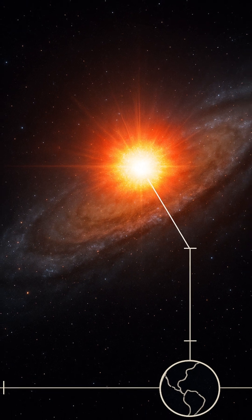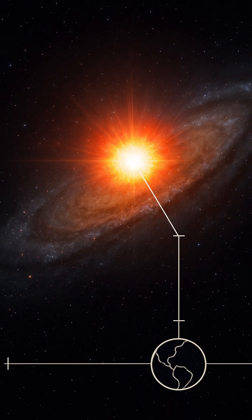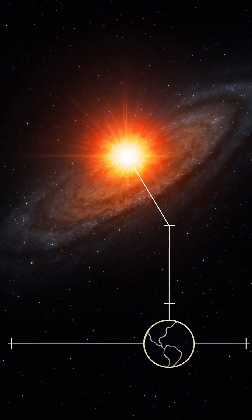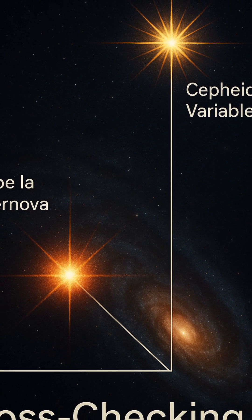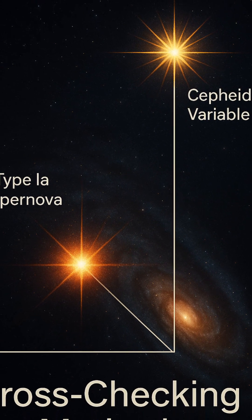To do this, astronomers have built what is known as the Cosmic Distance Ladder, a series of interlinked methods, each calibrated by the one before it, that stretches from our cosmic backyard to the most distant galaxies.